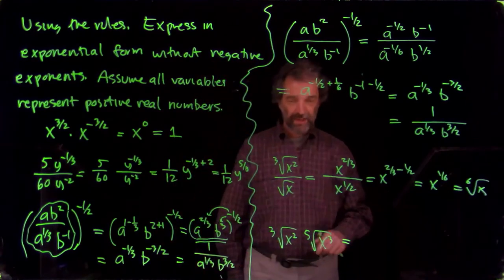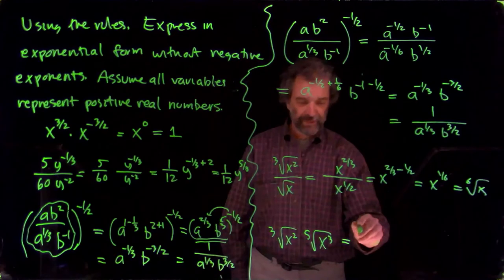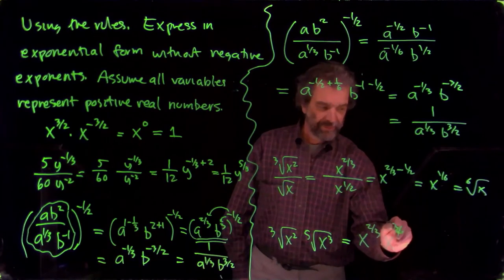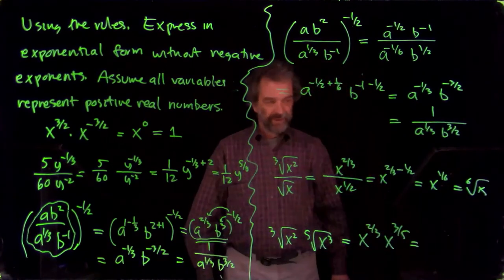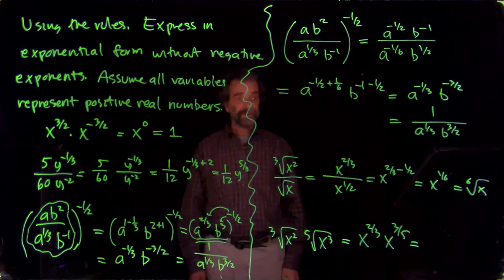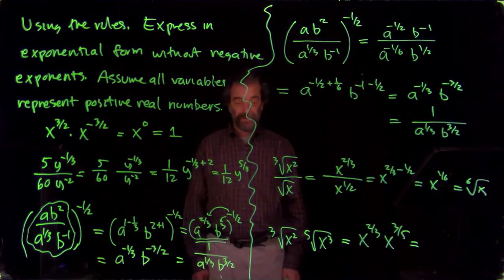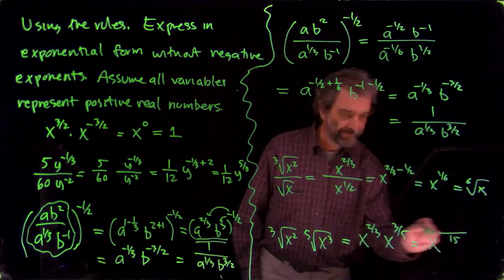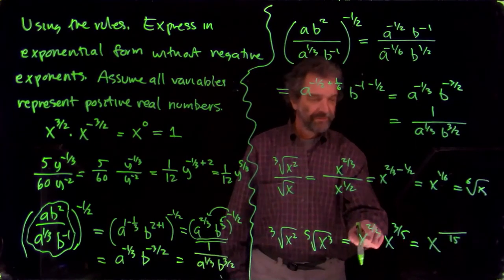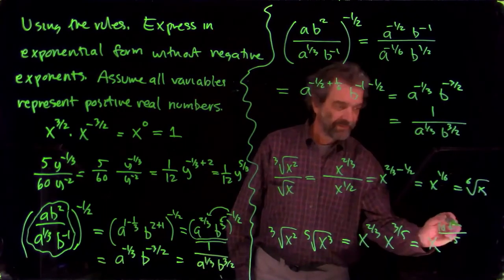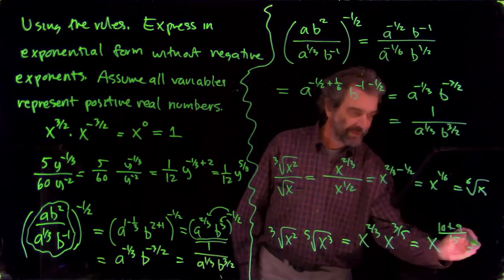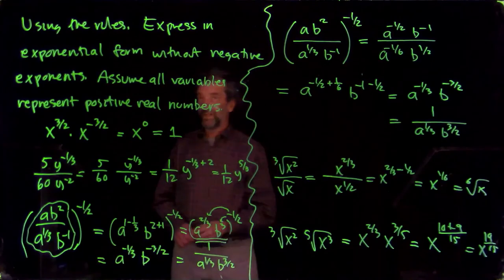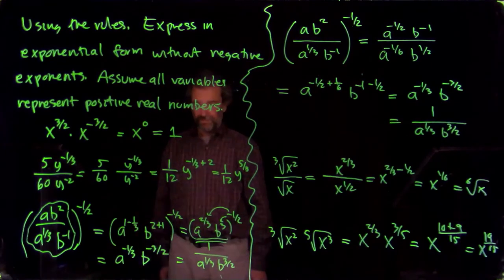And downstairs here we're doing the same game. We're going to replace these with exponential partners. So that's x to the two-thirds and x to the three-fifths. Multiply together. And now I have to multiply x to the two-thirds times x to the three-fifths. So I have to add the exponents. I need a common denominator. It's going to be fifteen. And so that's ten-fifteenths. And that's nine-fifteenths. So x to the nineteen-fifteenths. We've got that done. Finished off the section.